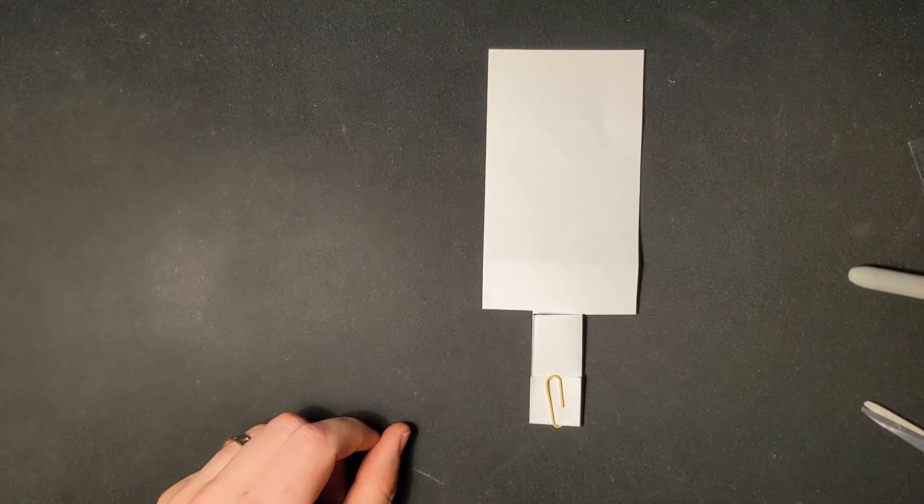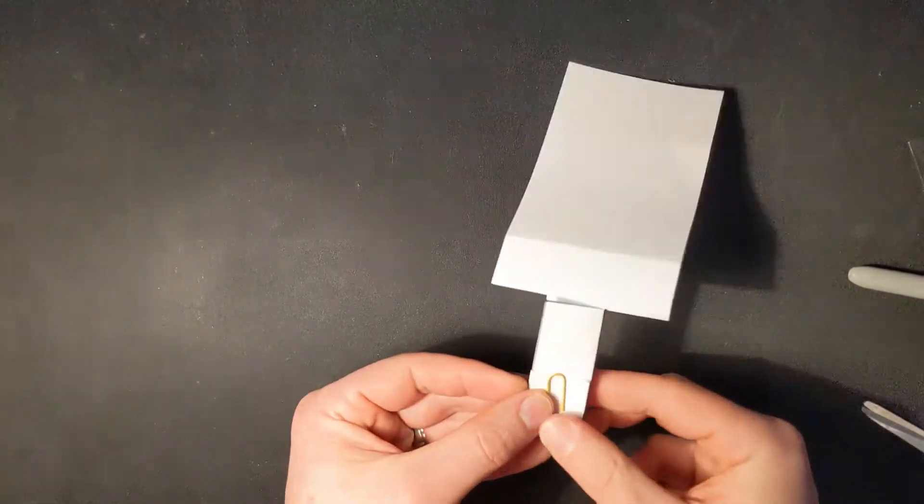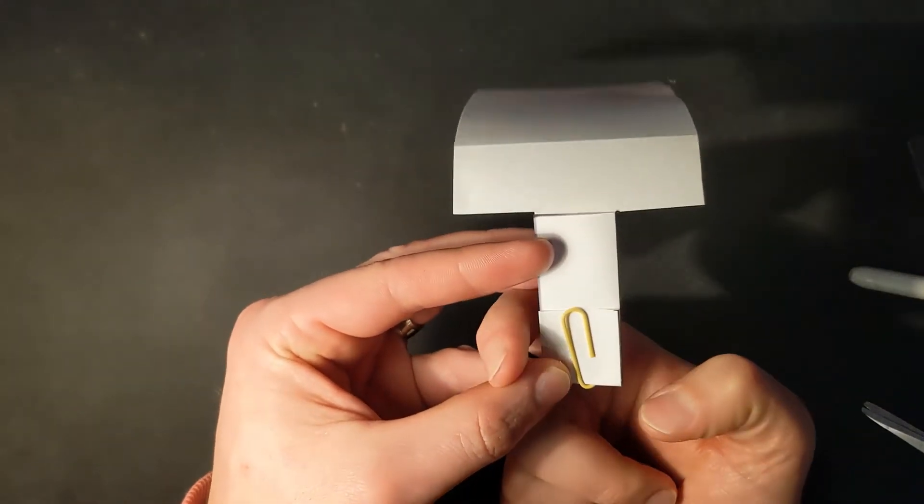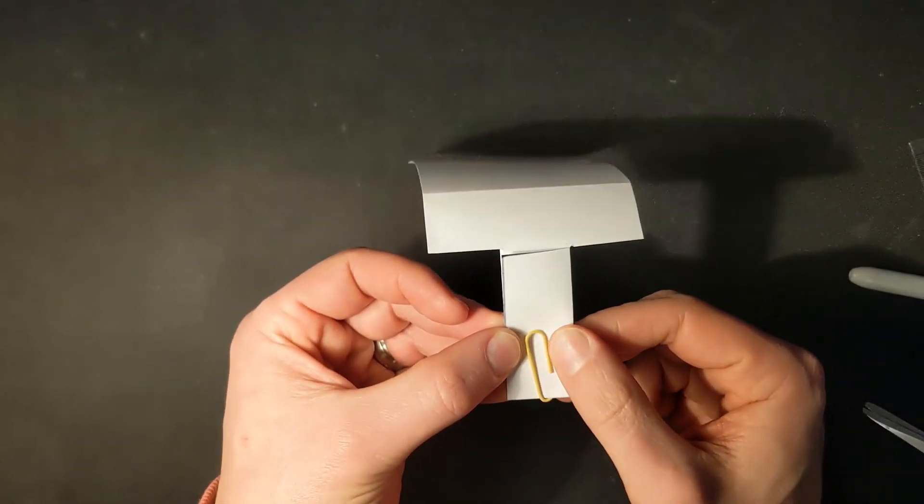If you have tape, then instead you would actually just tape around here. Okay, so you'd tape it around in order to keep that flap in place.